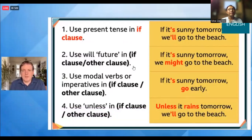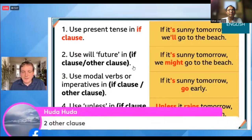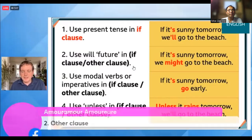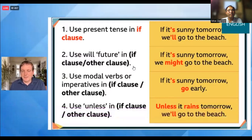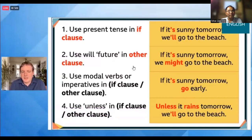What about the will future - where do we put it? Huda has said for number two, the other clause. Amor agrees. Yes, we use the will future in the other clause. So 'if it's sunny tomorrow, we'll go to the beach' - 'we'll' is the contraction for 'we will'. That's the will future in the other clause, not the clause that has 'if' in it. Really important - will does not go in the if clause.